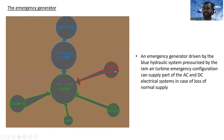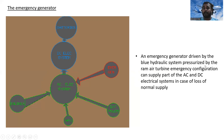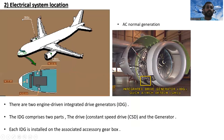The emergency generator is driven by the blue hydraulic system, which is pressurized by the RAM air turbine. In emergency configuration, it can supply part of the AC and DC electrical systems in case of loss of normal supply.